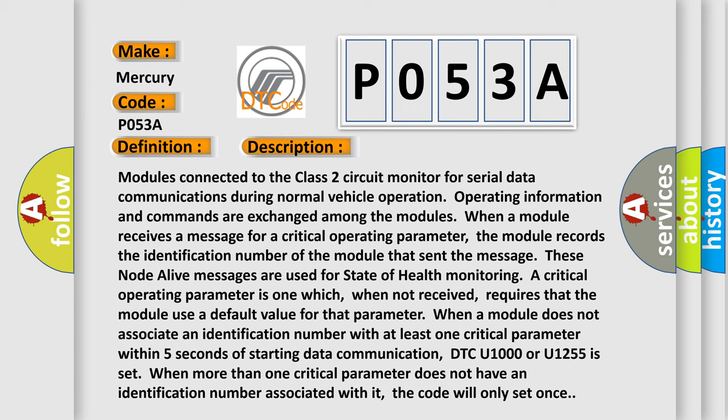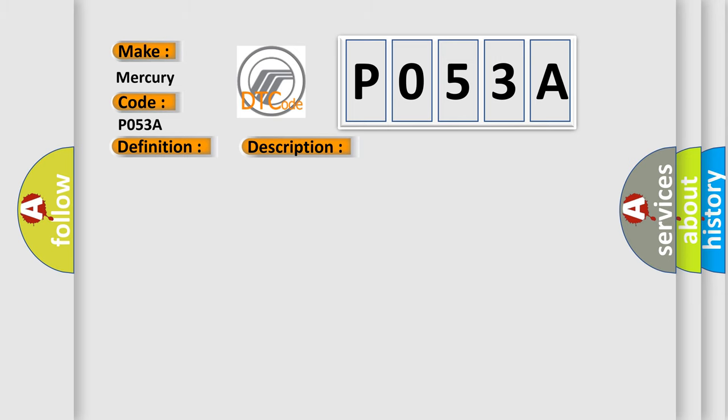within five seconds of starting data communication, DTC U1000 or U1255 is set. When more than one critical parameter does not have an identification number associated with it, the code will only set once. This diagnostic error occurs most often in these cases: